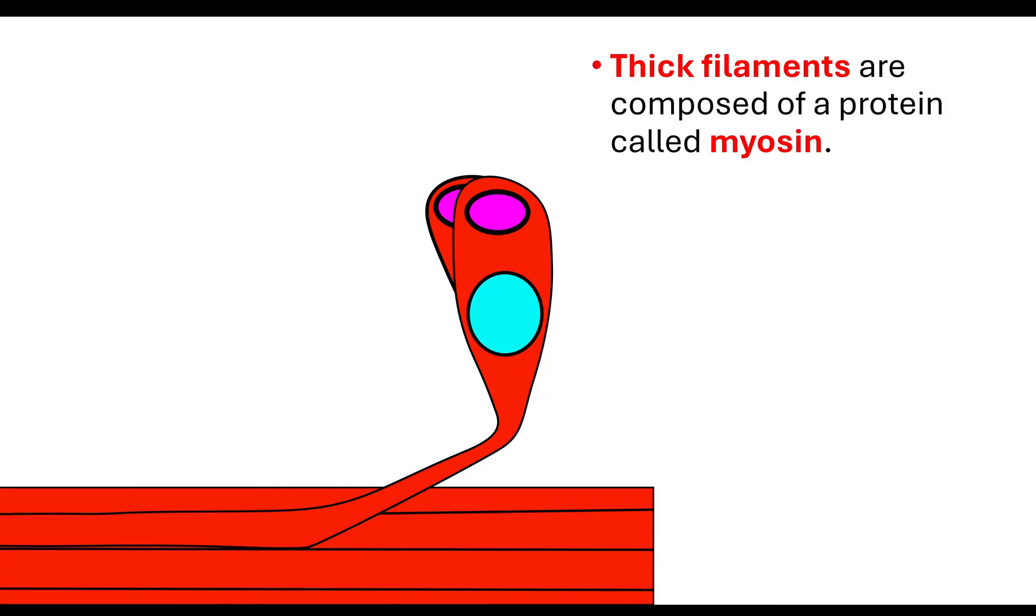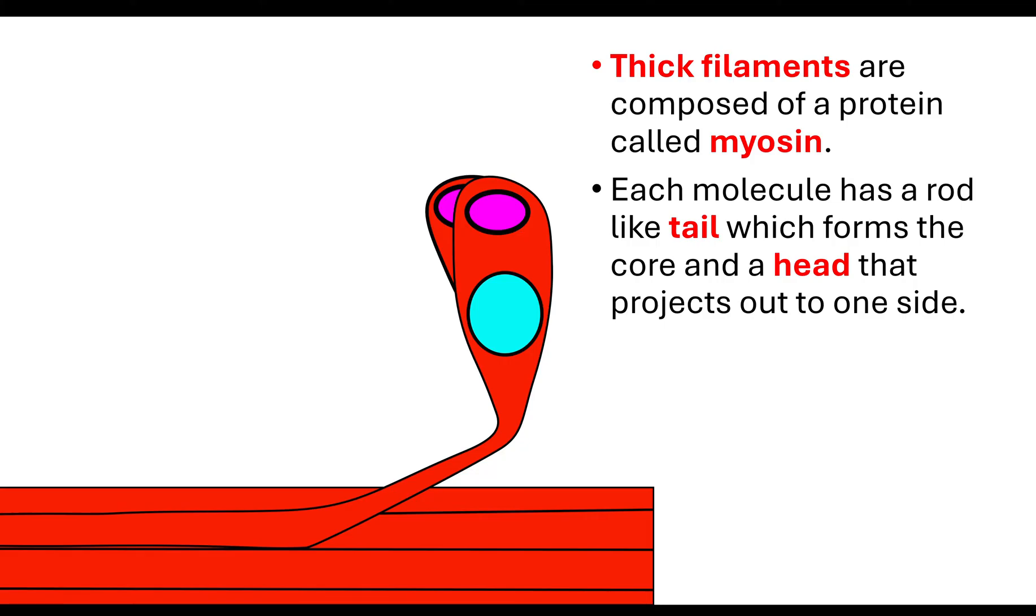The thick filament is composed of a protein called myosin. Myosin is really important because it is a rod-like structure. Each molecule has this rod-like structure which we call the tail.